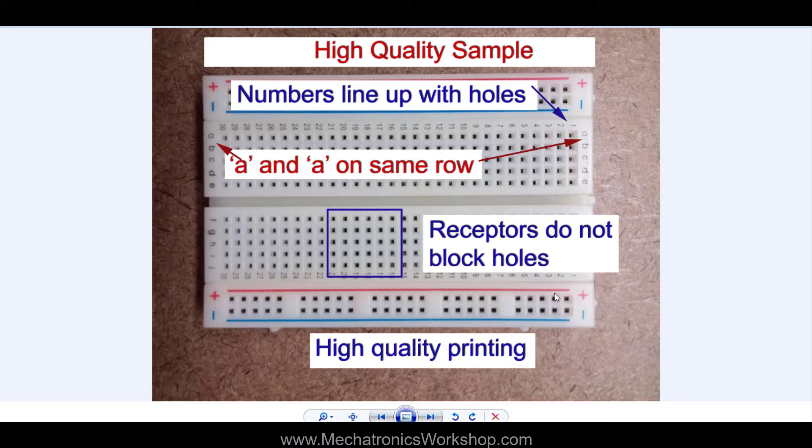And the lines are much more solid than they are on a bad board. So the sure way to tell you've got a bad board is your stuff just won't go in the sockets. But you can also look at these other things too. Okay, let's go have a look at Amazon. I'll show you a couple pretty good ones to go for.